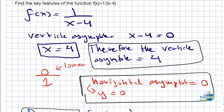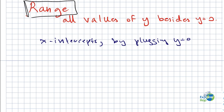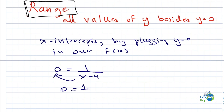Now that we have the range, domain, horizontal asymptote, and vertical asymptote, there are some other key features remaining — for example, x and y intercepts. We can find the x intercepts by plugging y equals to 0 into our function, which gives us 0 equals 1 over x minus 4. Rearranging, this becomes 0 equals 1, which is not possible. Therefore, there are no x intercepts.